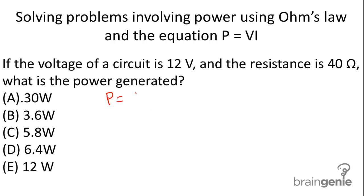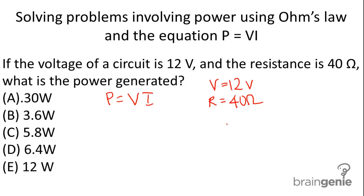We have our equation P equals VI, and our knowns are the voltage being 12 volts and the resistance equaling 40 ohms. We have an issue here — we don't have the current, therefore we must use Ohm's Law to solve for the current.